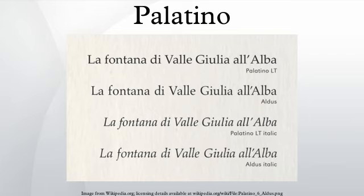Book Antiqua was designed as an alternative to licensing the fonts mandated by Adobe's PostScript standard. Both Book Antiqua and Arial share the original typeface's character width, spacing, and kerning properties. However, Book Antiqua resembles Palatino much more than Arial does Helvetica — indeed, the two are quite difficult to tell apart.